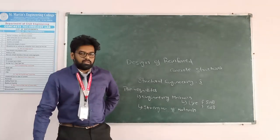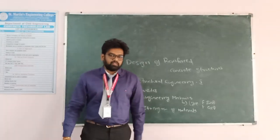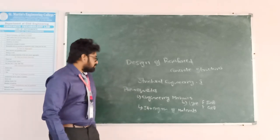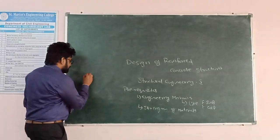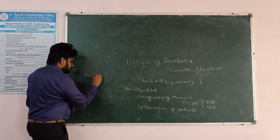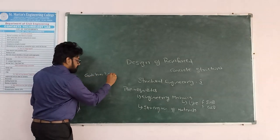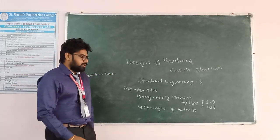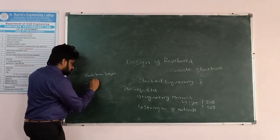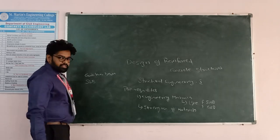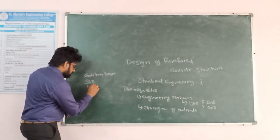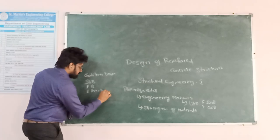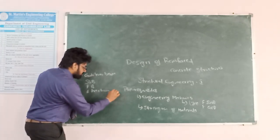In Strength of Materials we cover different types of beams: cantilever beam, simply supported beam, fixed beams, and overhanging beams. These are the topics covered in Strength of Materials.